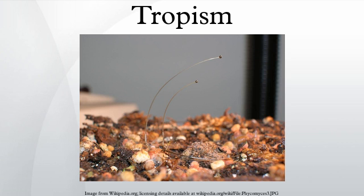In botany, the Went model, proposed in 1927, is an early model describing tropism in emerging shoots of monocotyledons, including the tendencies for the stalk to grow towards light and the roots to grow downward. In both cases, the directional growth is considered to be due to asymmetrical distribution of auxin, a plant growth hormone.